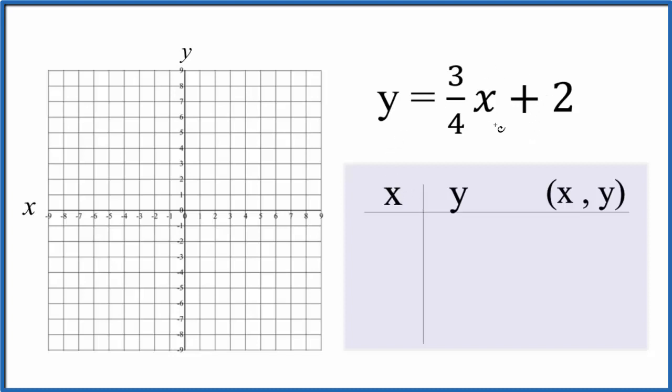So let's put some values in for x. We want them to fit on the graph here. So we'll start with zero. Because three-fourths times zero plus two, that just gives us two. And we can put any number we want in. But again, it'd be nice if it fit on the graph and if it was a whole number.